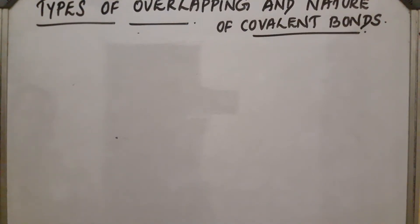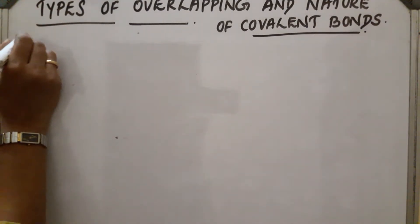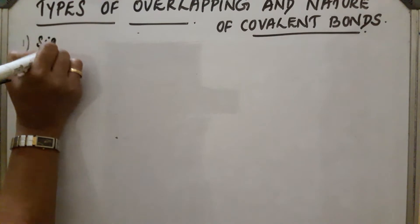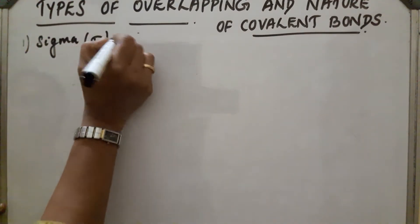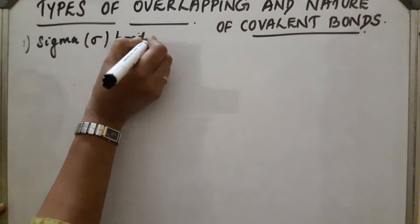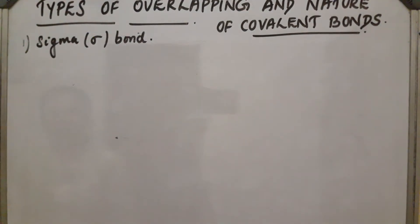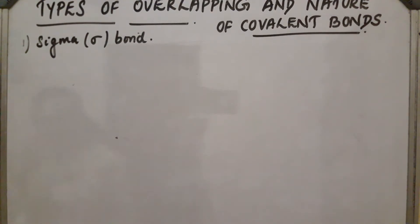Types of overlapping and nature of covalent bonds. Depending upon the type of overlapping, covalent bonds are divided into two: the first one is sigma bond and the second one is pi bond. The covalent bond formed by the end-to-end overlapping of half-filled atomic orbitals through the inter-nuclear axis is known as sigma bond.